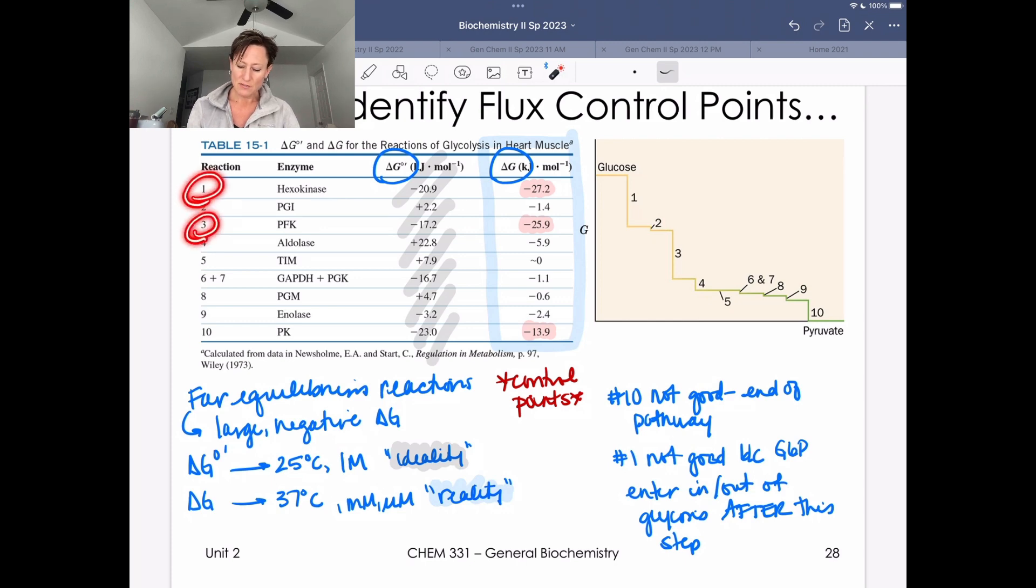We need to find different pathways for these large negative delta Gs in order to go back up to glucose from pyruvate. So gluconeogenesis is going to have to use different enzymes and different pathways to reverse those steps. But we are also going to see that the complementary enzyme for gluconeogenesis, which is going to be FBPase, that is going to be the control point going in the opposite direction. So we'll get to that a little bit later.